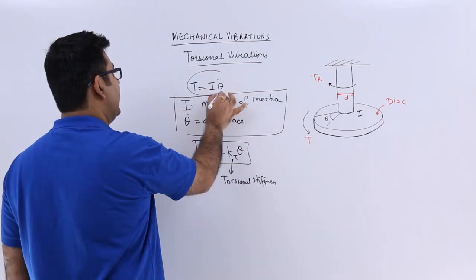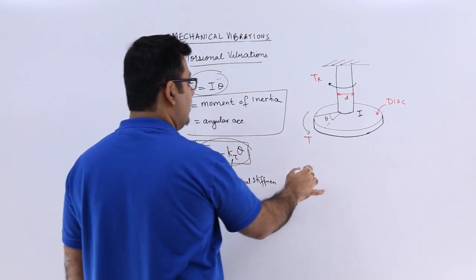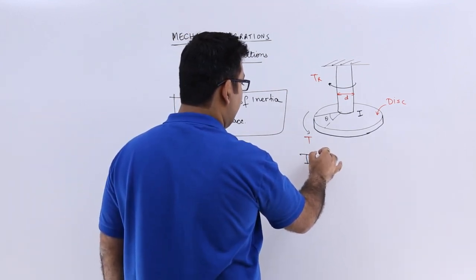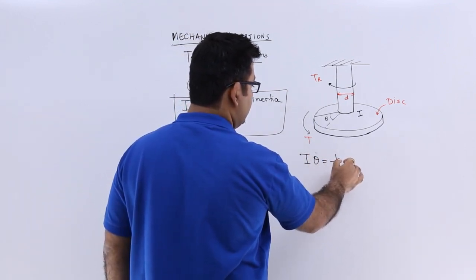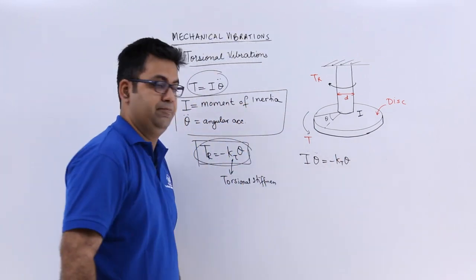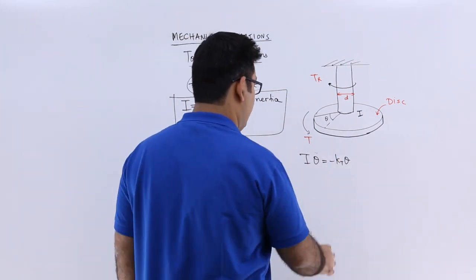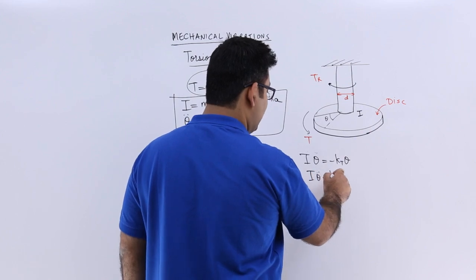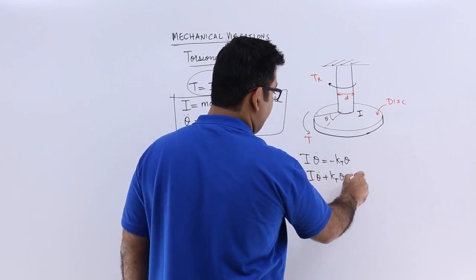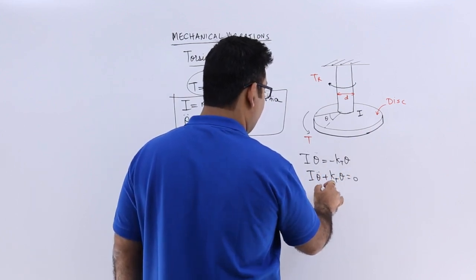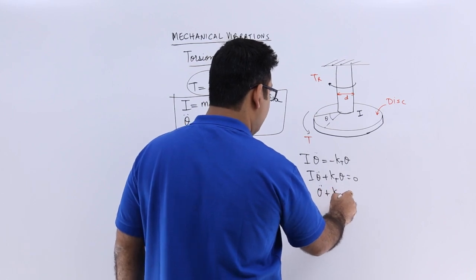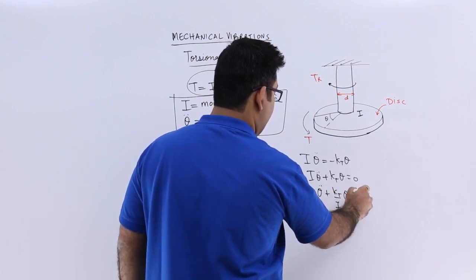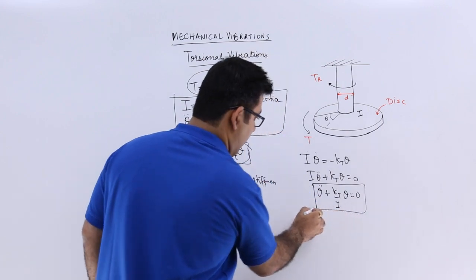So this has to be equal to this. You will get I theta double dot equals minus KT theta. This gives I theta double dot plus KT into theta equals 0. And this would give you theta double dot plus KT upon I into theta equals 0. This is what you get.